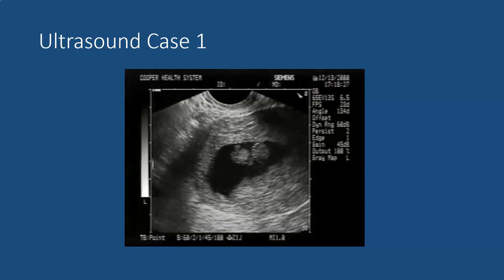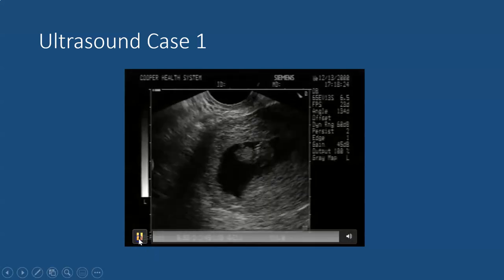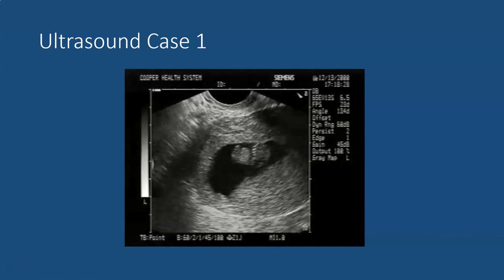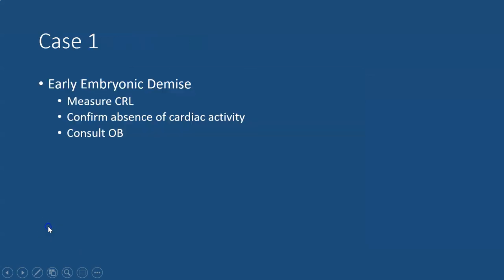In this transvaginal scan one can see a large irregular appearing gestational sac with a fetal pole which looks kind of slumped upon itself. As you look in the thorax you don't see any clear cardiac activity. This is an early embryonic demise. Once you've confirmed there's no cardiac activity and verified that it is large enough that you should expect to see it by doing a crown rump length, consultation with OB to discuss further management would be appropriate.